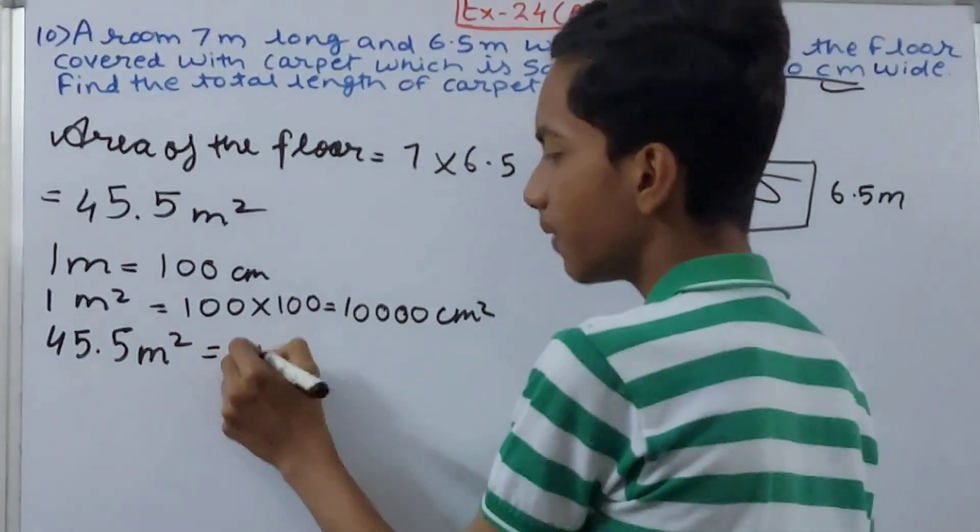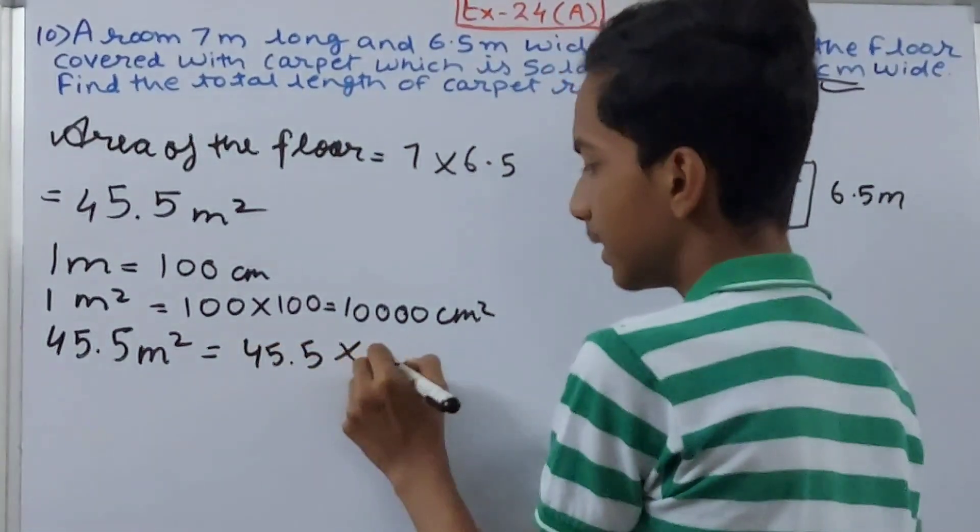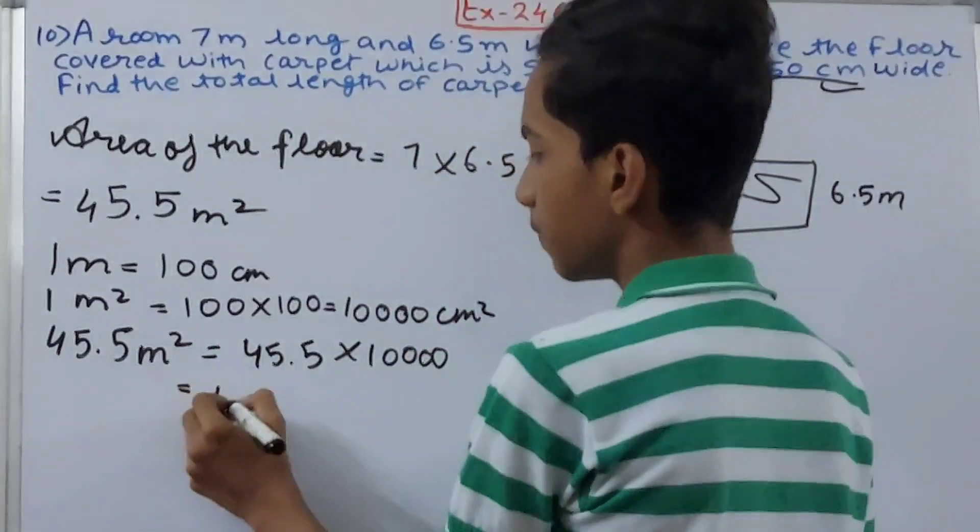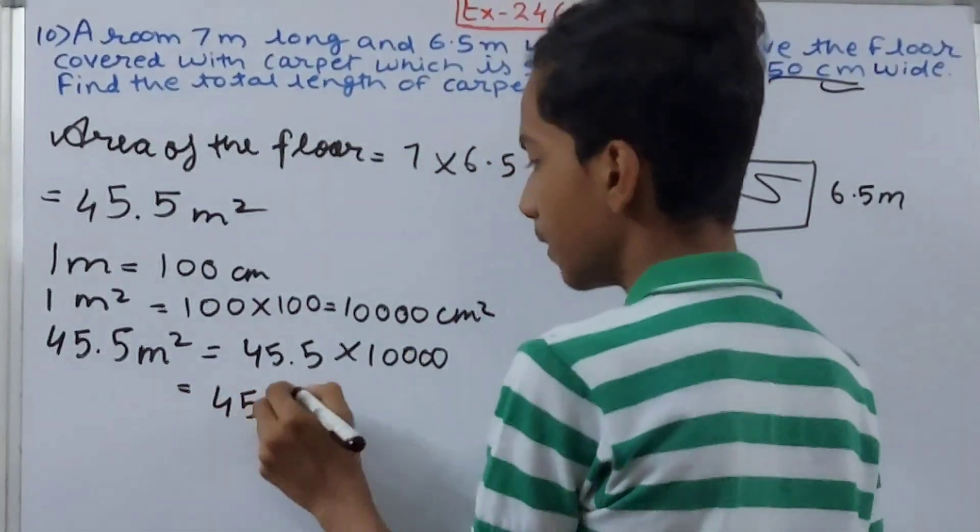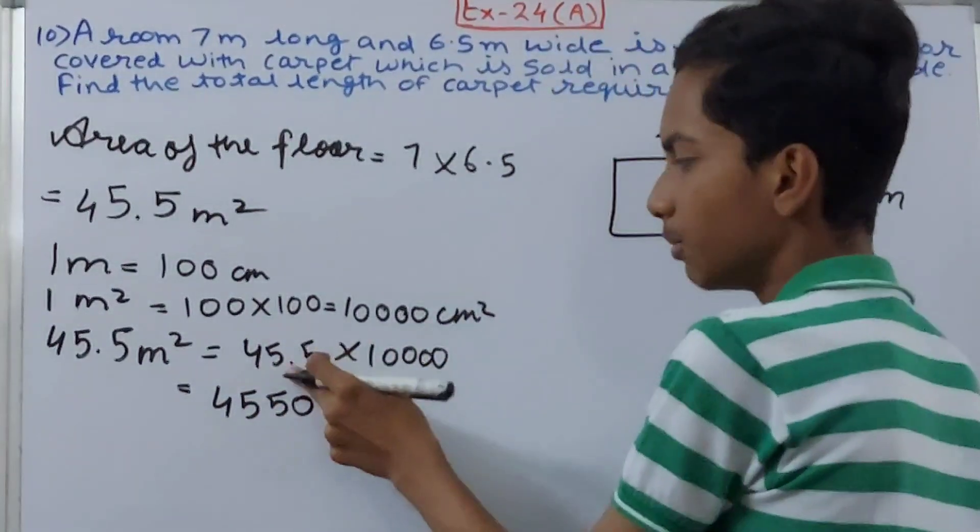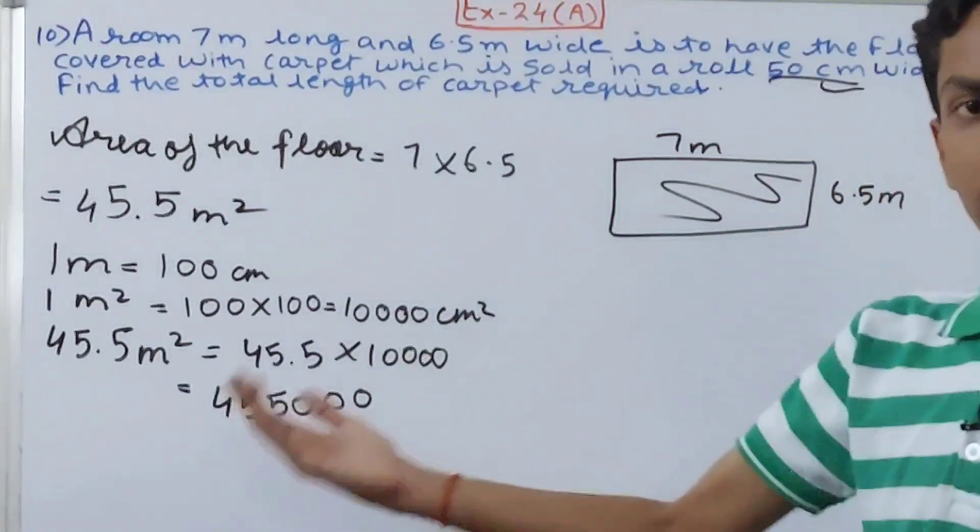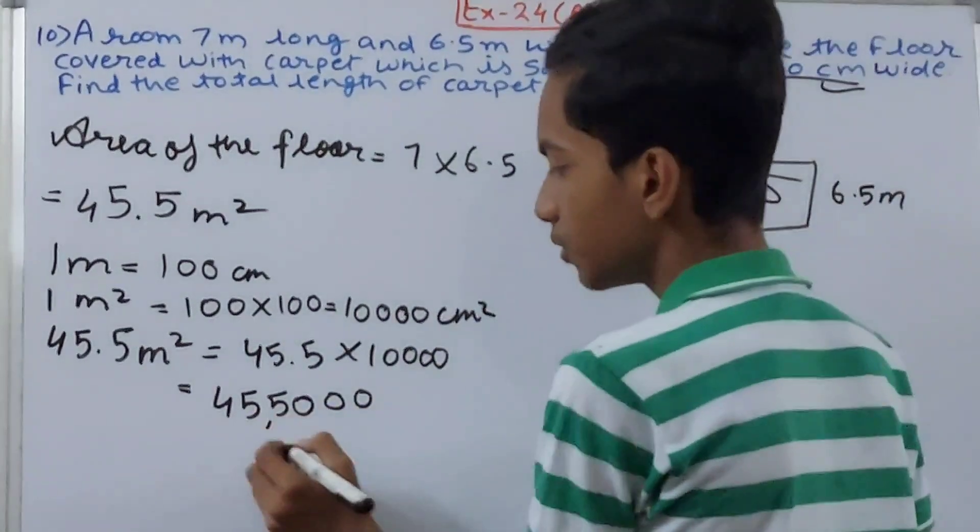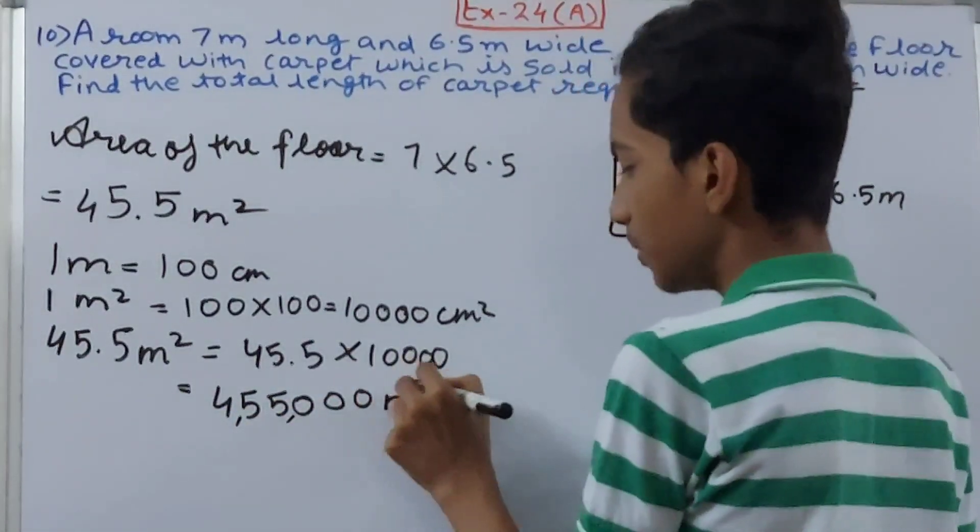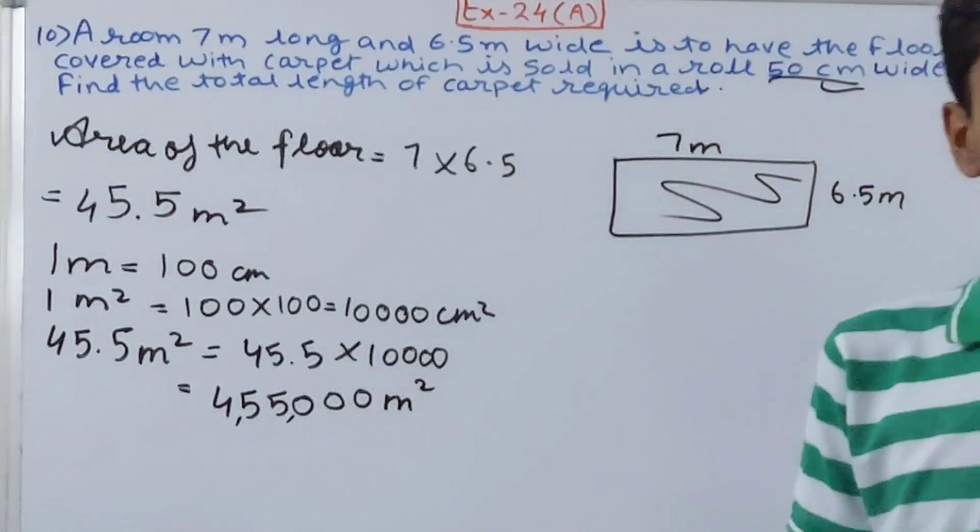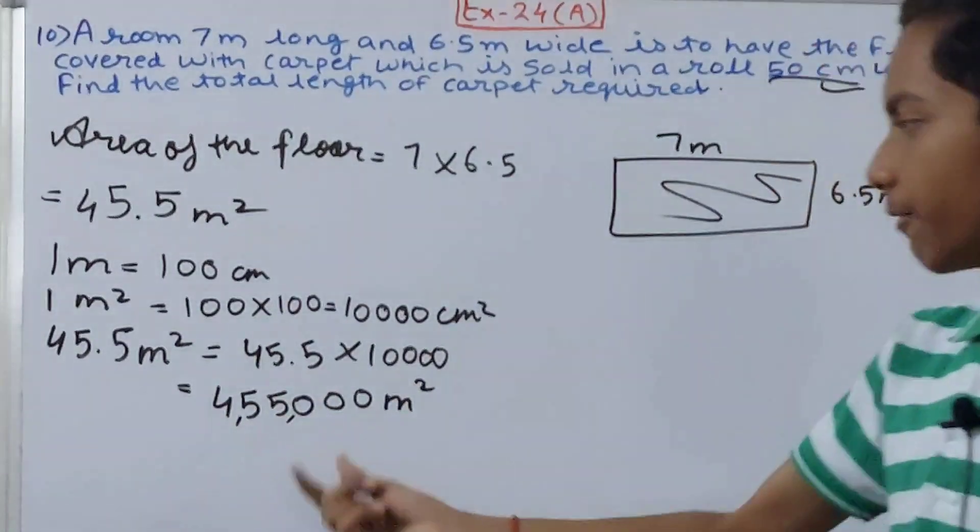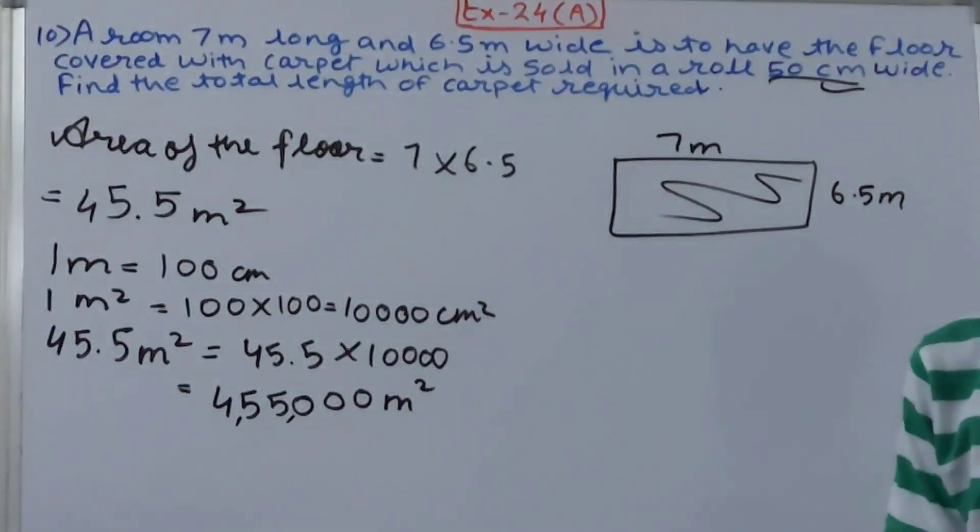We have 45.5 square meters. That will be 45.5 multiplied by 10,000. How much is that going to be? We have to move the decimal to the right - so 455,000 square centimeters. This is the area of the floor.